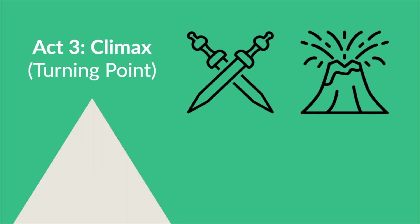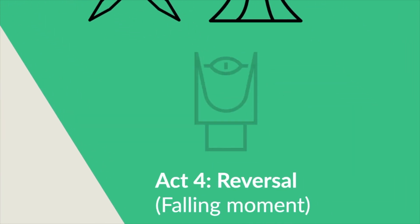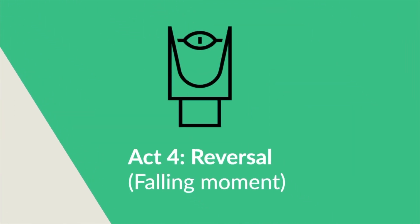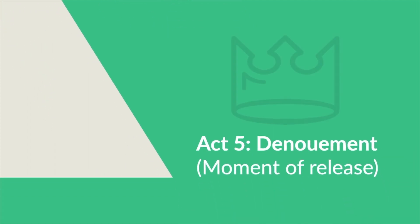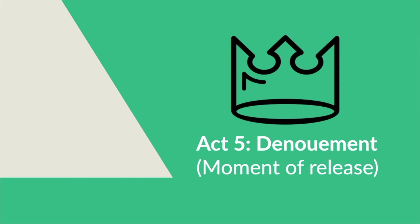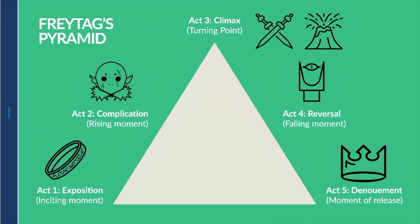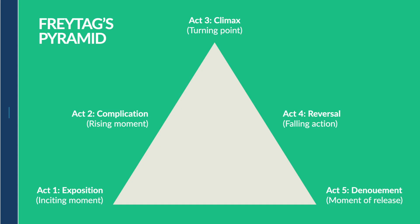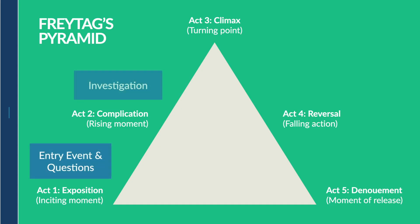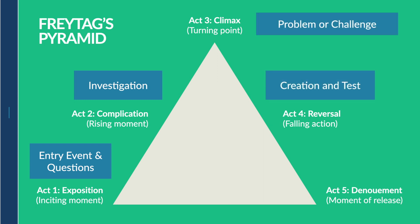Then in the reversal, there is a huge battle that results in the destruction of Sauron and the rescuing of the hobbits. And finally, in the denouement, the enemy scatters in disarray and Aragorn is crowned king. In a learning narrative, we have similar acts: the entry event and questions, investigation, problem or challenge, creation and test, and final product.